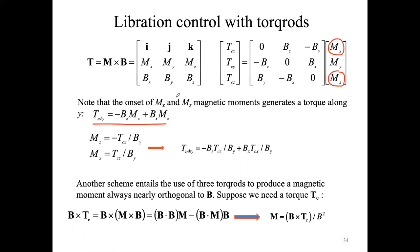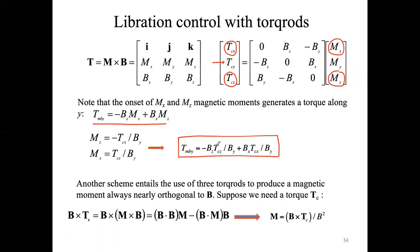We are trying to generate control torques along the X and Z directions to control the roll and yaw axes, but we have an undesired torque on the pitch axis. By substituting the magnetic moment expressions, you can find that the pitch torque depends on the torques needed for yaw and roll, and it depends on the ratio of the magnetic field components along the yaw and pitch axes.